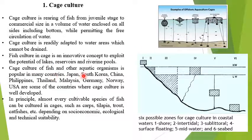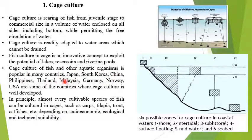Cage culture is very popular in Japan, South Korea, China, Philippines, Thailand, Malaysia, Germany, Norway, and the USA — countries where large amounts of fish and fish products are consumed and fish is a major staple diet. These countries have evolved and developed cage culture extensively.